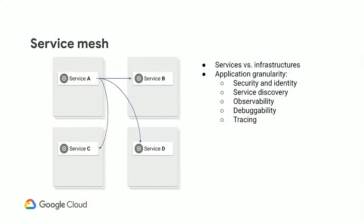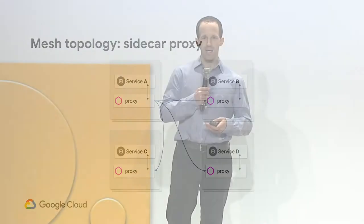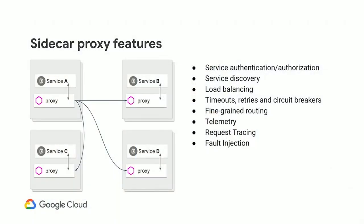In the service mesh, we abstract away all this network plumbing and the nuts and bolts, and instead we start reasoning at the granularity of applications and microservices. We think in terms of application security, service discovery, and observability. One common topology for the service mesh is the sidecar proxy. We inject into a container running alongside applications an additional process — a binary — which is essentially the gateway to the service mesh for that application. It contains all these network function goodies required to participate in the service mesh, from service discovery to authentication, authorization, rate limiting, tracing, and so on. All these network functions are factored out of the individual applications so that they don't need to be re-implemented multiple times in each different language or framework or microservice.